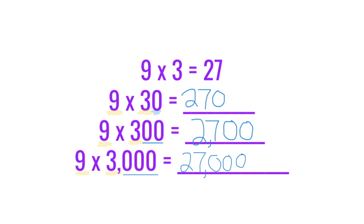You can see the basic fact 9 times 3 in all of the problems. And you can see the pattern in zeros as well. 30 gives you one zero. 300 gives you 2. And 3,000 gives you 3.